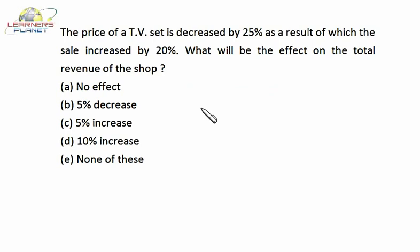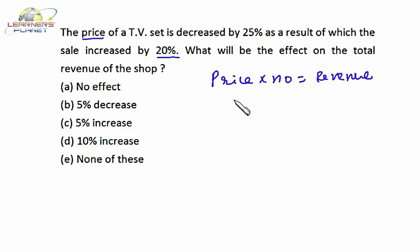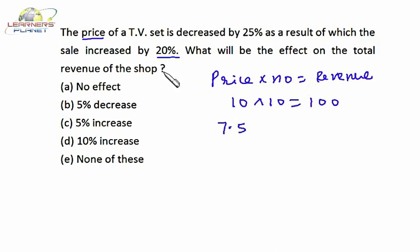Now in this case, the price of a TV set is decreased by 25 percent, as a result of which the sales increase by 20 percent. What is the net effect on revenue? Let both price and number of units be 10, so the initial revenue is 100. Price is decreased by 25 percent, so the new price is 7.5, and the sales increase by 20 percent, so the new number of units is 12.